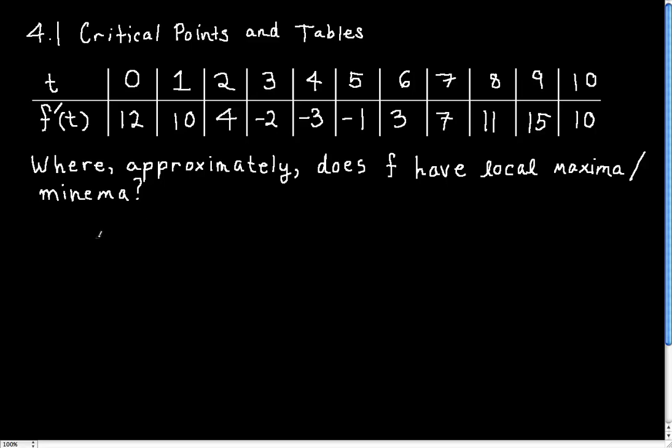Okay, so the way we are going to do this is we are going to try and see what information we can extract about f from these values of its derivative. And the first thing I notice is that in between 0 and 2, the values of the derivative are all positive, 12, 10, and 4. And so this corresponds to f being increasing.